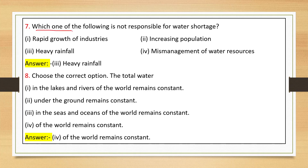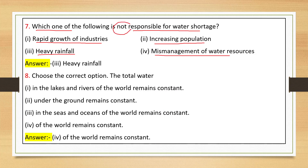Next question: which one of the following is not responsible for water shortage? Rapid growth of industries — this will cause water shortage. Increasing population — this will also cause water shortage. Heavy rainfall — heavy rainfall means there will not be water shortage. Mismanagement of water resources — this will also cause water shortage. So the answer is: heavy rainfall.